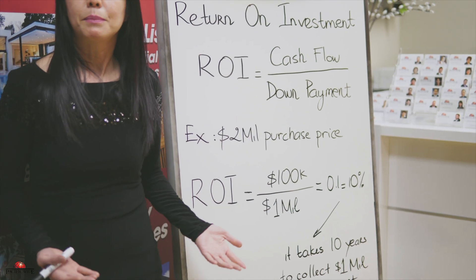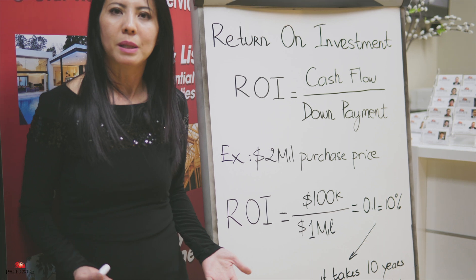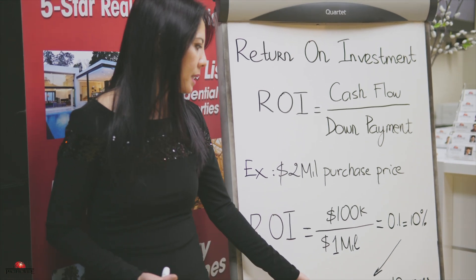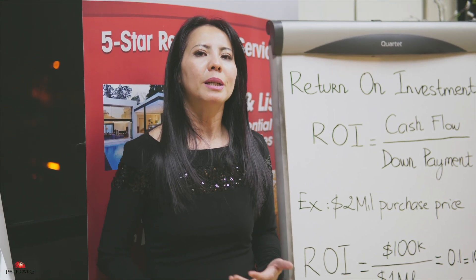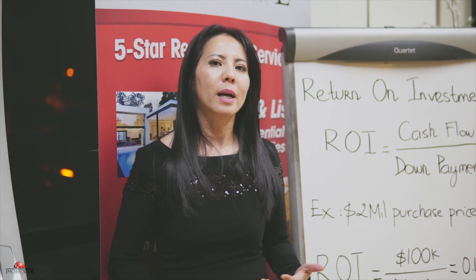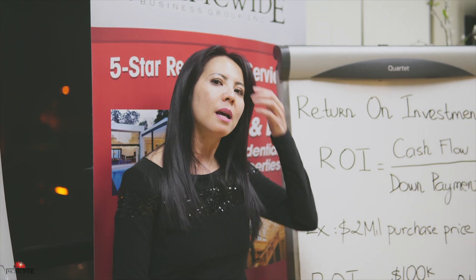What does 10% Return on Investment mean? It means you will get back your down payment in 10 years. Because if you get $100,000 cash in your pocket per year, 10 years later you will have gotten back $1 million. That's how fast you get your money back on your investment.